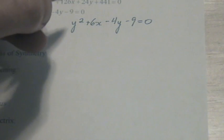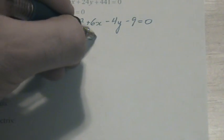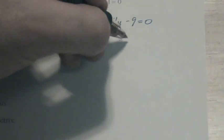So we're going to leave all the y's on the left hand side and move anything that is not a y to the right hand side. Minus 6x plus 9.